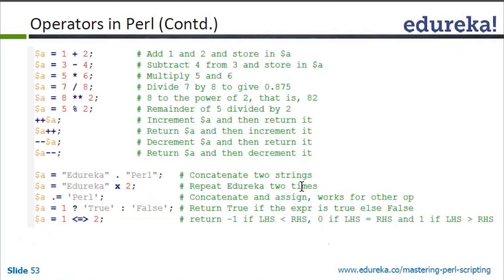We will try to rectify the typo — you can raise a ticket. You can understand it is an exponent shape. The last special operator in Perl: if LHS equals RHS it returns 0, if LHS is greater than RHS it returns 1, and if LHS is less than RHS it returns minus 1. It has three values: minus 1, 0, and 1. You can practice and understand this through more examples.